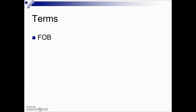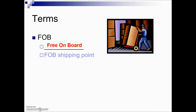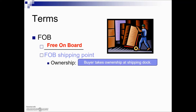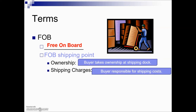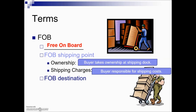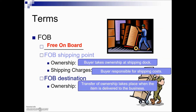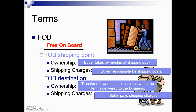When making purchases, there are some common shipping terms. The first is FOB, short for free on board. There are two types: FOB shipping point, where ownership transfers to the buyer at the shipping dock and shipping charges are the buyer's responsibility; and FOB destination, where the seller pays the shipping charge and retains ownership until the goods reach the destination.